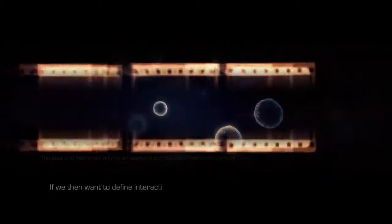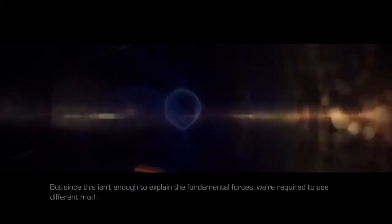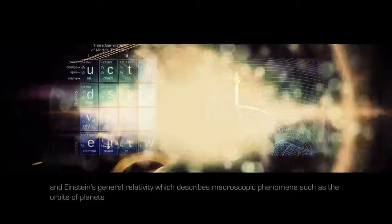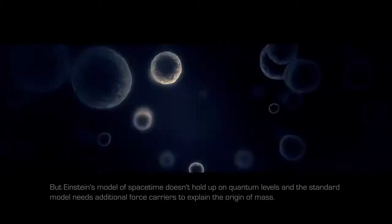C's interpretation of this single self-annihilating moment is framed within an abstract arrow of time. If we then want to define interaction and look at the basic properties of the wave-particle duality of quanta, all interactions would consist of interference and resonance. But since this isn't enough to explain the fundamental forces, we are required to use different models. This includes the standard model, which mediates the dynamics of the known subatomic particles through force carriers, and Einstein's general relativity, which describes macroscopic phenomena such as the orbits of planets, which follow a curvature or ellipse in space and a helix in space-time. But Einstein's model of space-time doesn't hold up on quantum levels, and the standard model needs additional force carriers to explain the origin of mass. Without success, a unification of both models or theory of everything has been subject of much research.